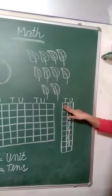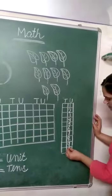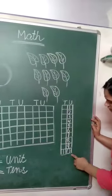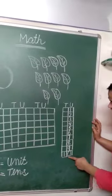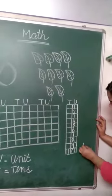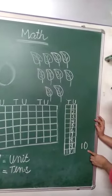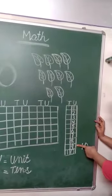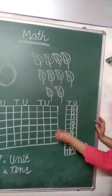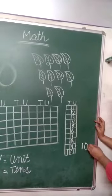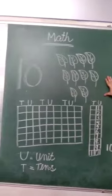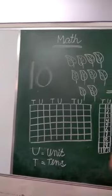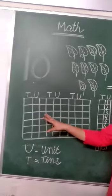अब जैसे हमने यहाँ पर कोई दूसरा नम्बर लिखा तो यह क्या बनाए हैं? 10s. अब हमने यहाँ पर क्या बनाया? 1, 0 और 1 — यह क्या बन गया? 1 unit and 10s. यह 10s कैसे बना? क्योंकि हमारे पास 2 डिजिट नम्बर आ गए. पहले 1 से 9 तक 1 unit यानि 1 डिजिट नम्बर. जैसे यहाँ बनाया तो यह क्या बन गया? एक 10 नम्बर का ग्रुप.